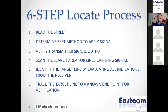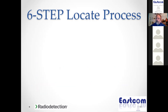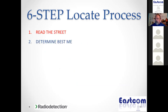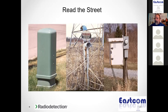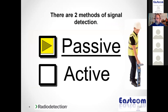Years ago we developed what we call the six-step process of locating. The first step when you arrive on a job site is to read the street — look for what's out there and what utilities may be buried. Whether you're a contractor wanting to know what's in the ground or a locator picking out one utility while dealing with others, you read the street: look for visible clues, use your maps and drawings, and use your past experience.